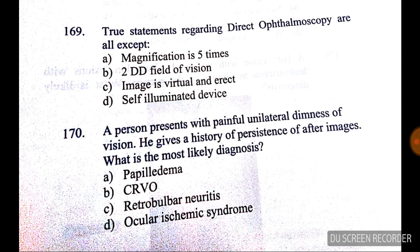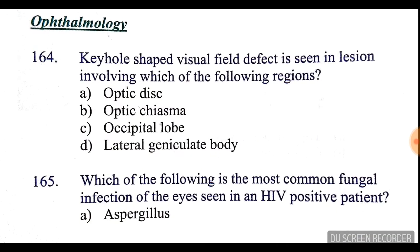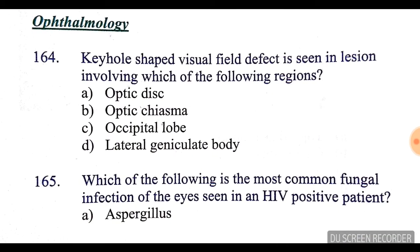Question number 170: a person presents with painful unilateral diminution of vision with a history of persistence of after-images. What is the most likely diagnosis? It is ocular ischemic syndrome — that option is correct.